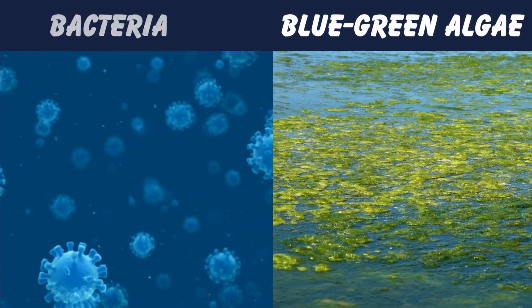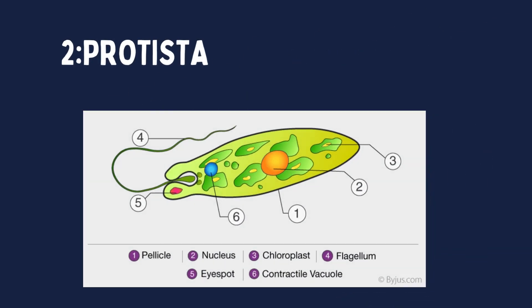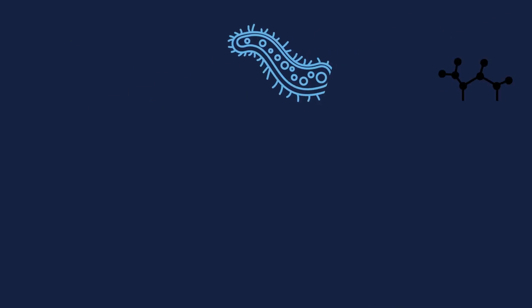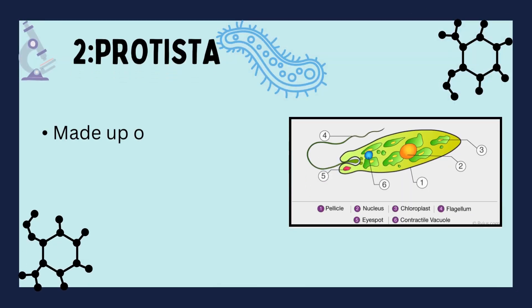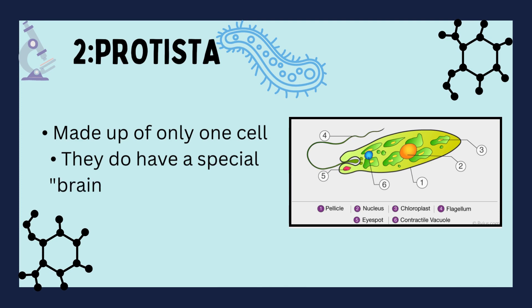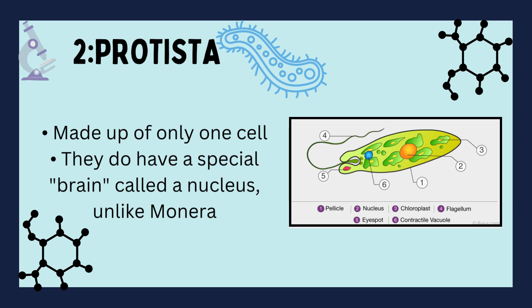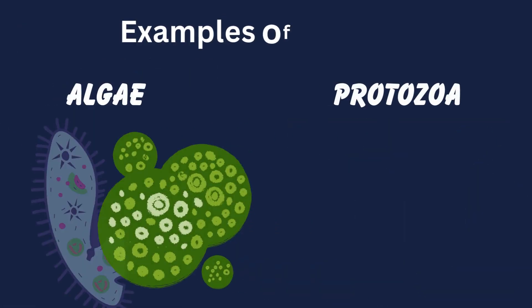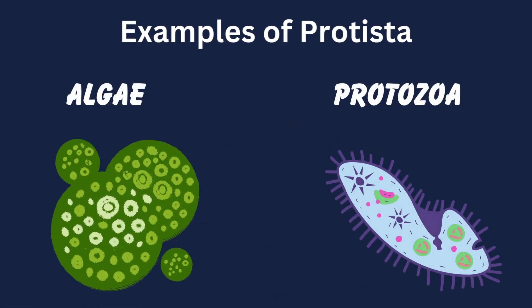Next up is Protista. This group also has living things that are made up of only one cell. Unlike Monera, they do have a special brain called a nucleus. Examples of Protista include algae and protozoa.